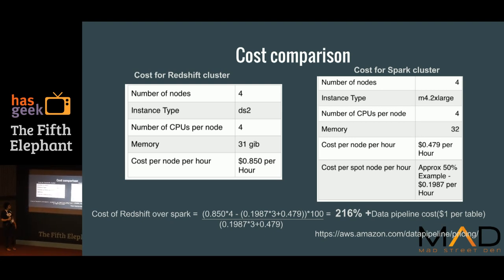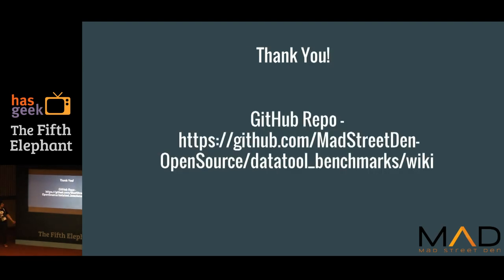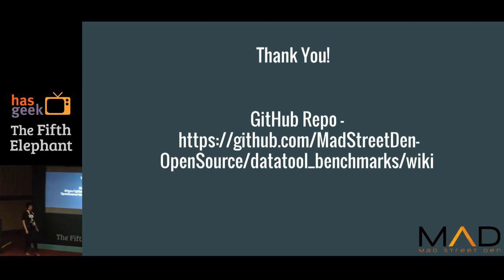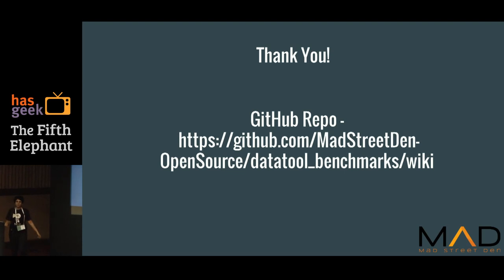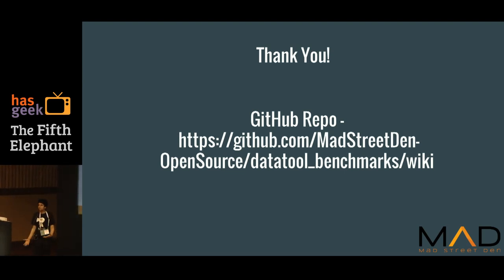If you do a cost comparison, the on-demand node cost for the Redshift node is double the price of the equivalent Spark node. I hope I've given you a good understanding of what you should be considering. Spark, Redshift, pandas, NumPy — all the code that we have benchmarked is on GitHub. It's going to be a very active repo with a lot more work in progress. Thank you. You're always free to go back to the repo and give suggestions — if there's something you feel can be optimized further, please feel free to get in touch.